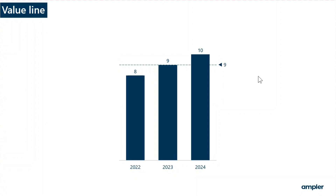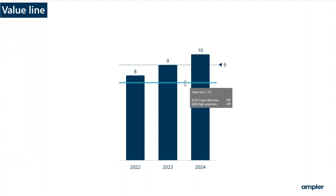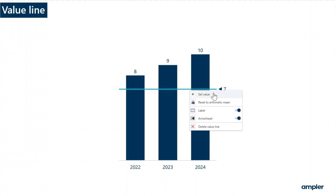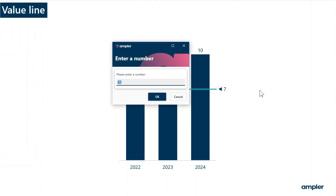To change the line, drag to the desired position or use the arrow keys on your keyboard, or right click and select set value from the context menu.